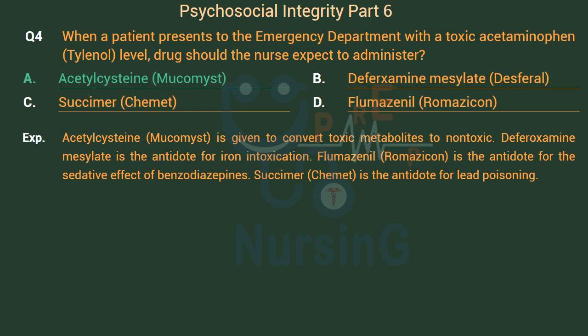Acetylcysteine (Mucomyst) is given to convert toxic metabolites to non-toxic. Deferoxamine mesylate is the antidote for iron intoxication. Flumazenil (Romazicon) is the antidote for the sedative effect of benzodiazepines. Succimer (Chemet) is the antidote for lead poisoning.